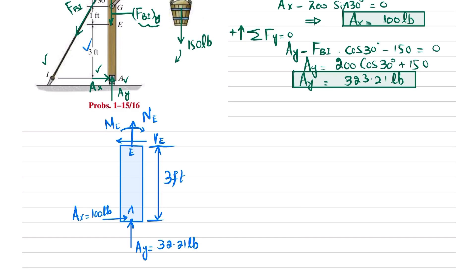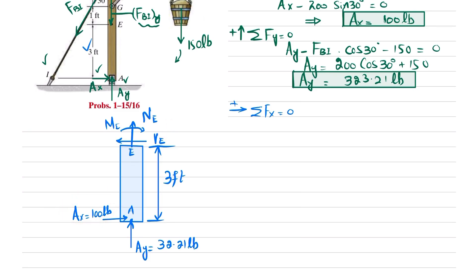Applying the equilibrium condition: sum of all forces along the x-direction equals zero, taking forces in the positive direction. The forces are Ve and Ax. So 100 minus Ve equals zero, giving Ve equals 100 pounds.